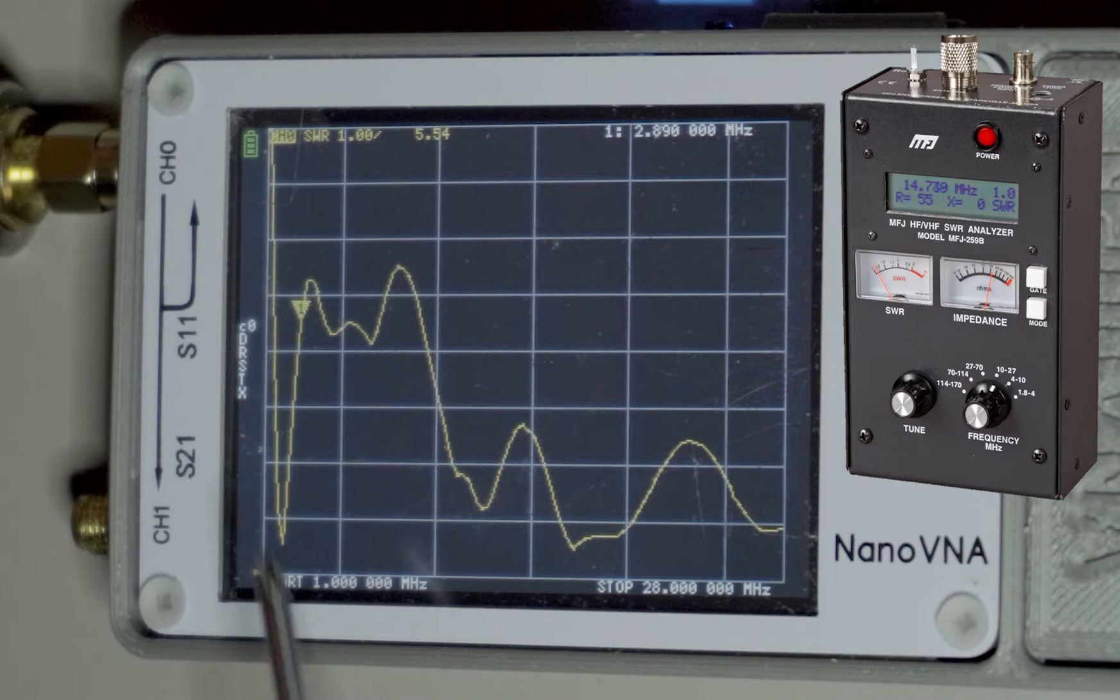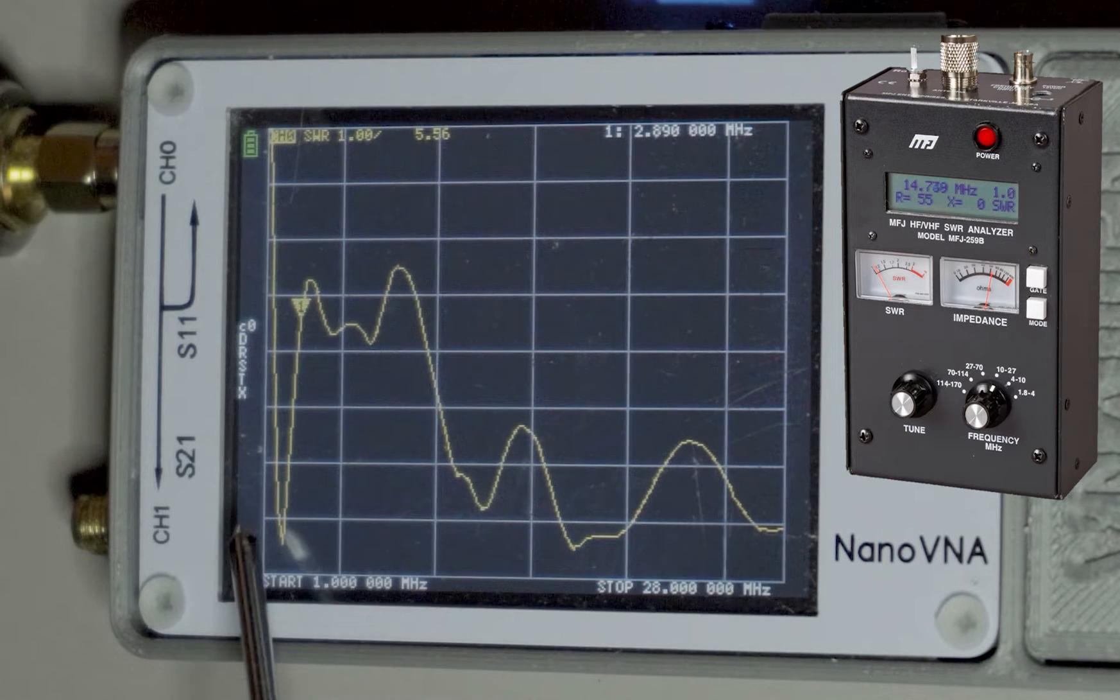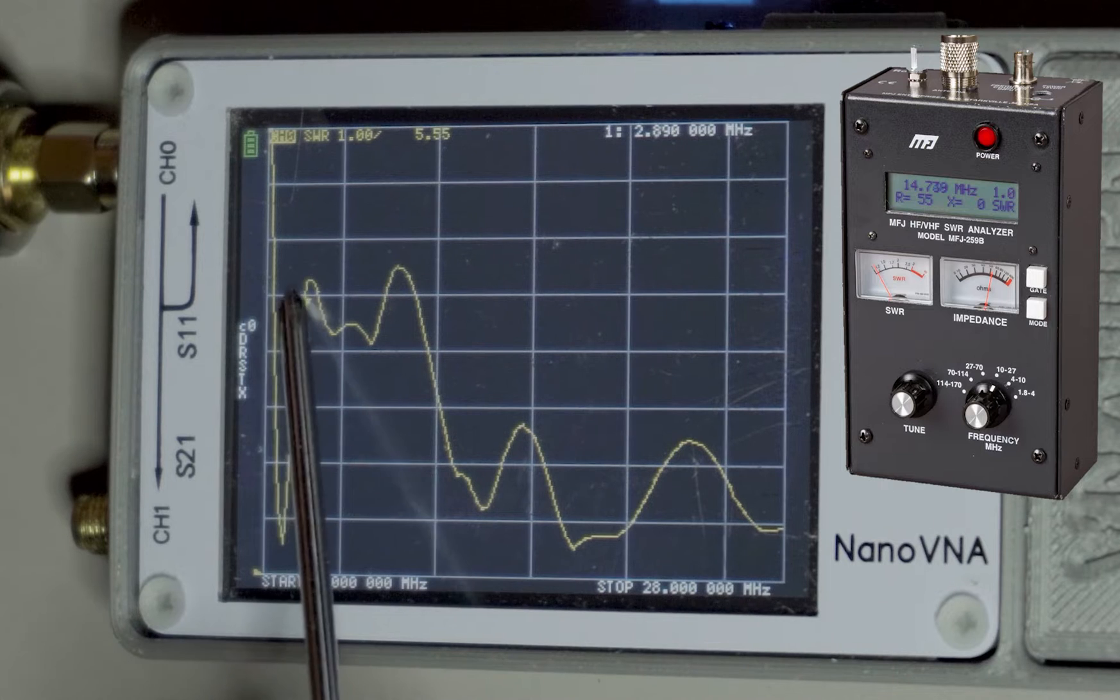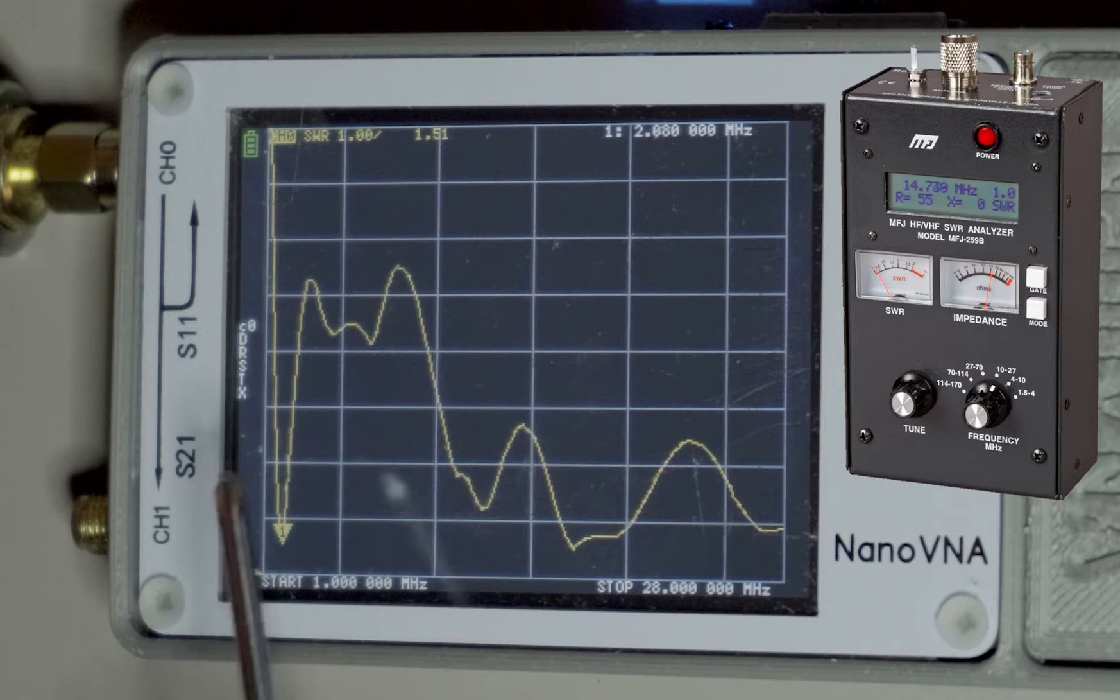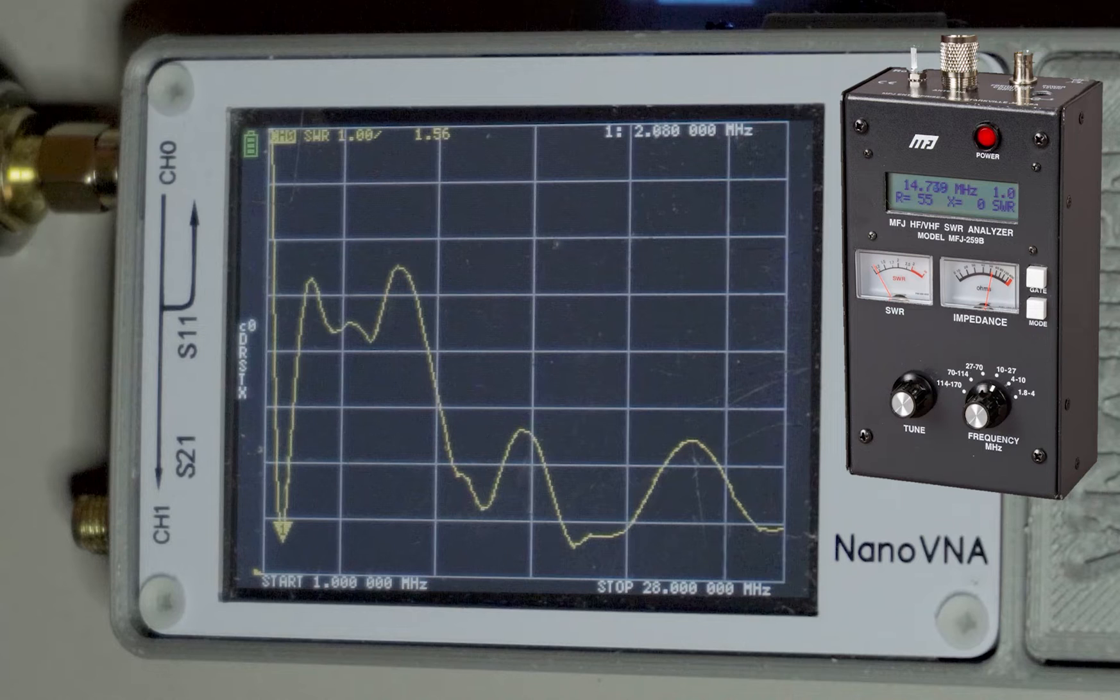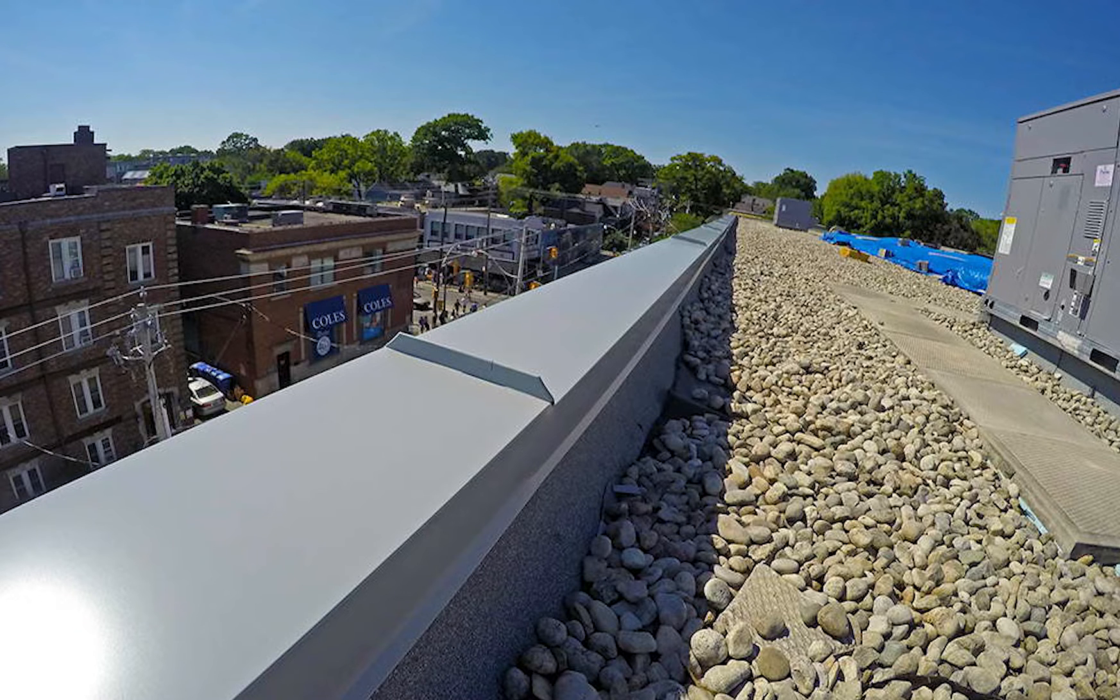Hey, this is Carson, VA3OSO. I wanted to share a quick comparison of the Nano VNA and the MFJ259B Antenna Analyzer, comparing the SWR of my home antenna, which is roof flashing on the roof of my apartment building.